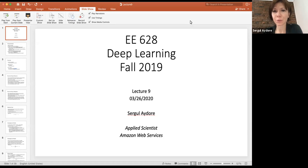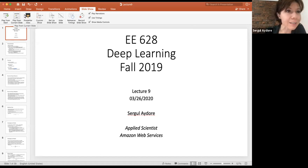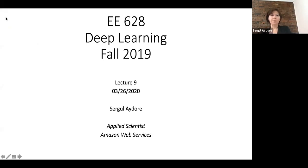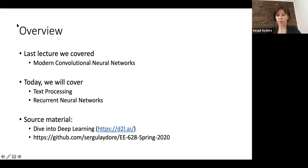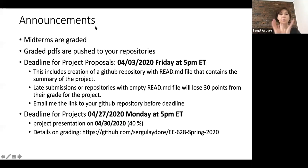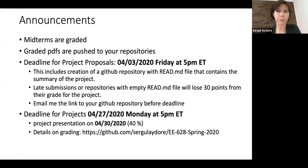This is lecture 9 of EE 628 Deep Learning course at Stevens Institute of Technology. A few announcements: midterms are graded and the PDFs have been pushed to your private repositories. Let me know if you have any questions. Also, the deadline for the project proposal is April 3rd, Friday at 5 p.m.